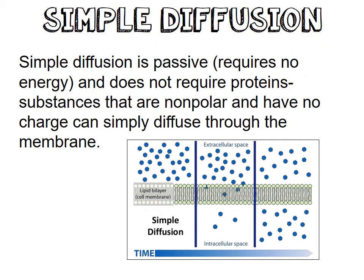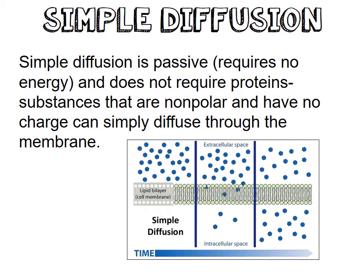Simple diffusion is passive, so it requires no energy — no ATP is used. It does not require proteins. These substances are nonpolar and have no charge, so they just go right through. They move from high concentration to low concentration. If they're at equilibrium, they're not going to really move.